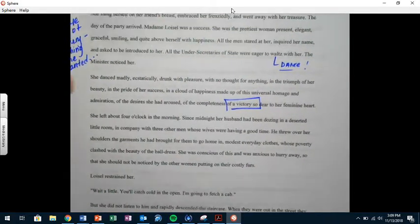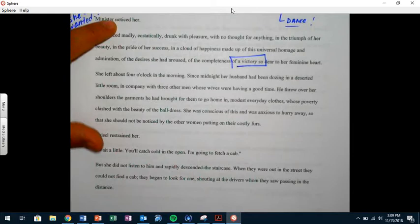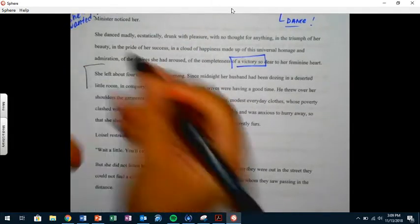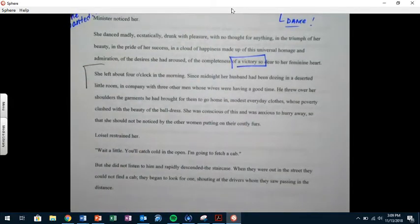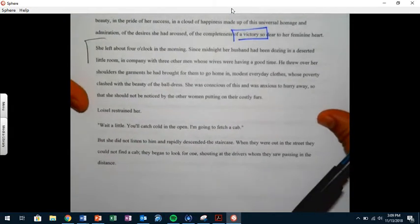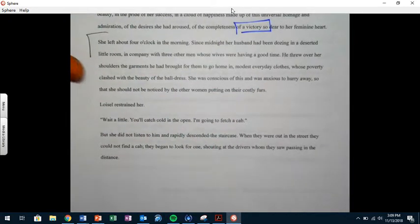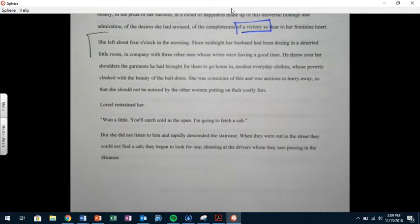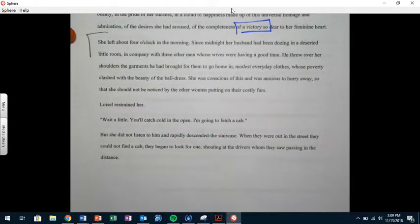We see here that the text says that she left about four o'clock in the morning. Guys, this is the 1800s. Is this the time to get home? We're in 2018 and my mother would still tell me this is not the time to get home. My mom wants me home latest at midnight, or at least two o'clock, but four?